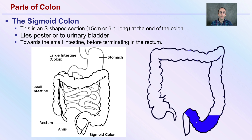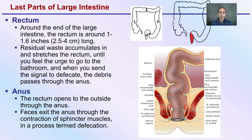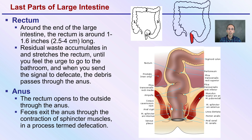We have the sigmoid colon — an S-shaped section about 15 centimeters or 6 inches long at the end of the colon, lying posterior to the urinary bladder and terminating just before the rectum. The rectum, shown in red here, is only about 2.5 to 4 centimeters long. This is where residual waste accumulates and stretches the rectum until you feel the urge to go to the bathroom, sending the signal to excrete. Finally, waste exits through the anus, where a contractile sphincter muscle helps pass the waste particles out of the body.